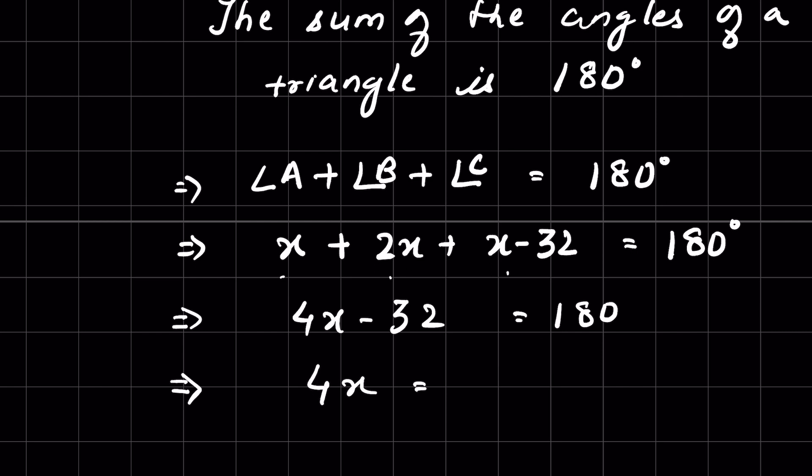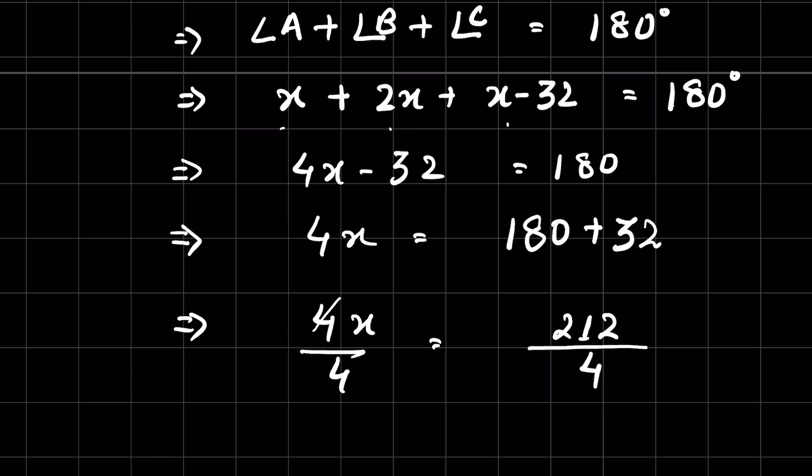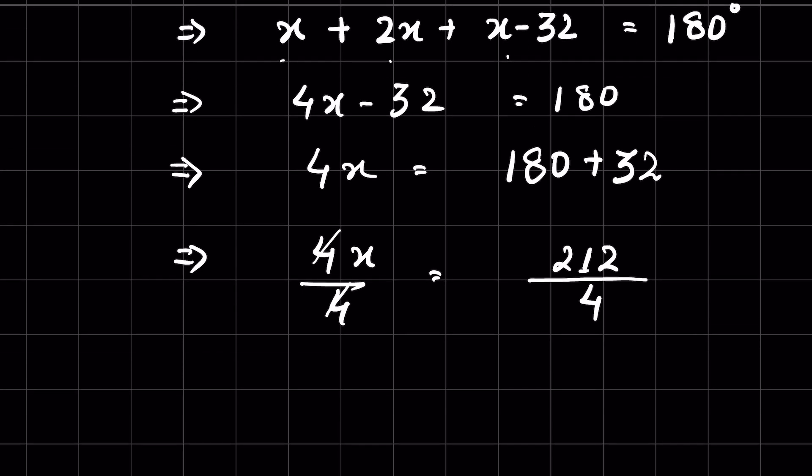So 4x is equal to 180 plus 32. Or we divide both sides by 4, then it is 212 upon 4 on the right hand side and 4x upon 4 on the left hand side. We can cancel this 4 and this 4, or x is equal to 212 divided by 4, which is 53. 53 times 4 is 212.